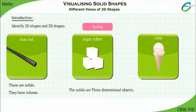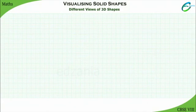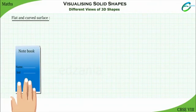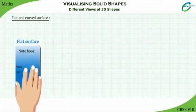3D objects have different plane surfaces. Let us observe the plane surfaces of objects. While touching the surface of a book, we feel flat surface.